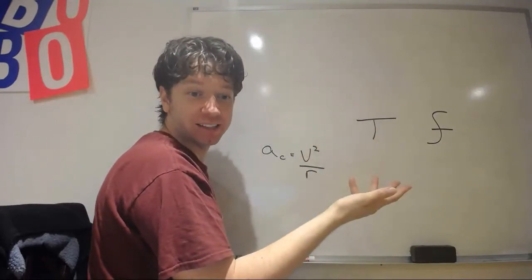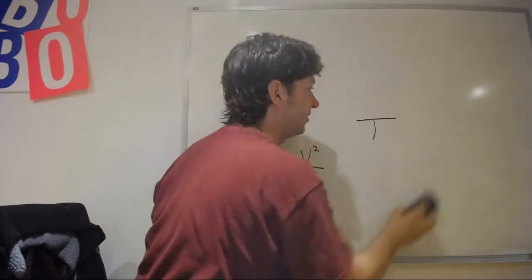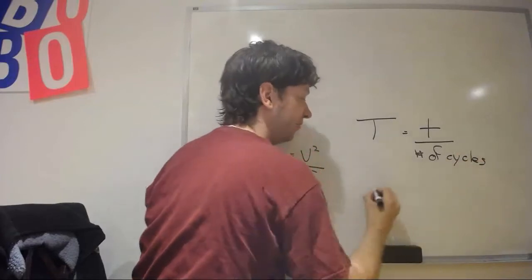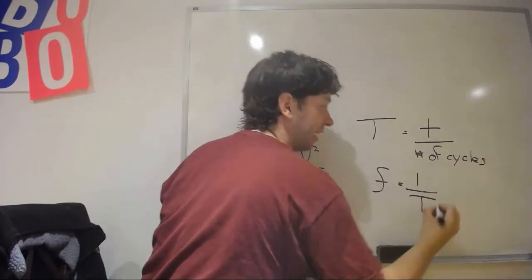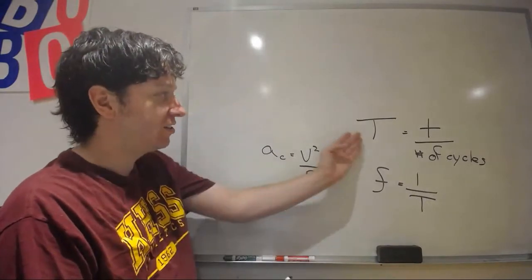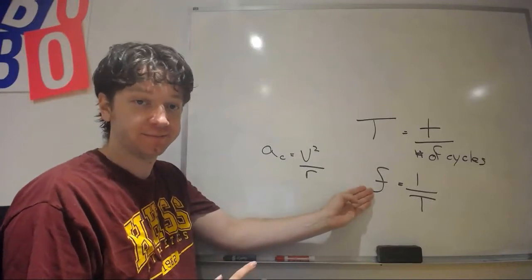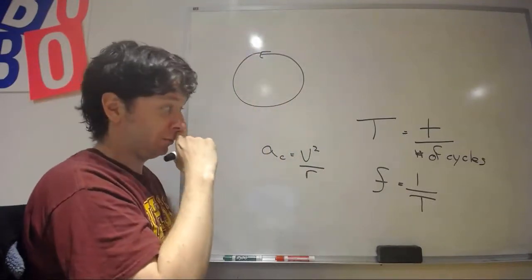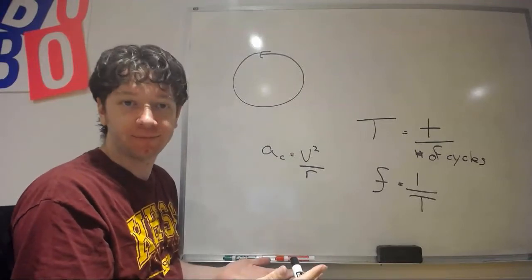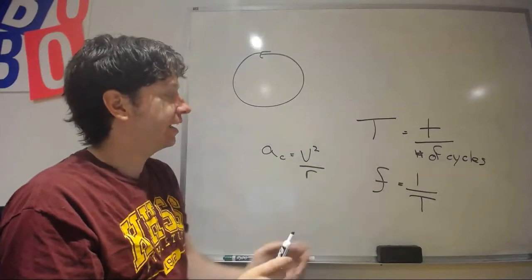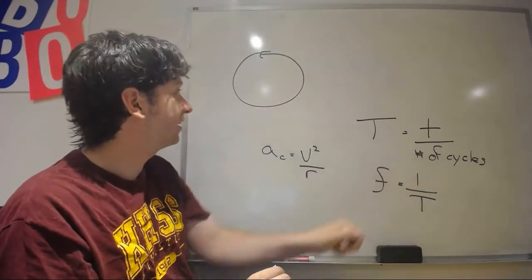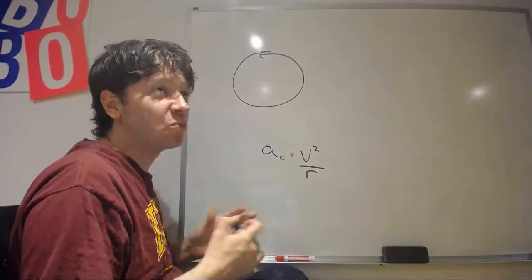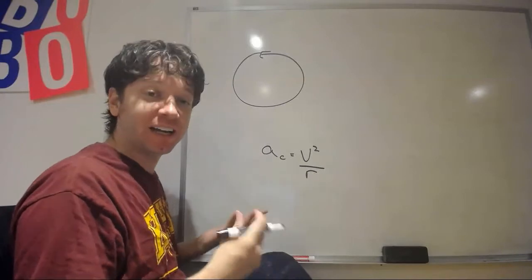In grade 11 you may remember period and frequency for repetitive motion. Period is the time it takes to complete one cycle, with units of seconds. Frequency is the inverse — the number of cycles per unit time — with units of per second, which we call Hertz. If you're going in a circle, going around once takes a certain amount of time: that's the period. Going around once, the distance you travel is the circumference of the circle, which is 2πr.